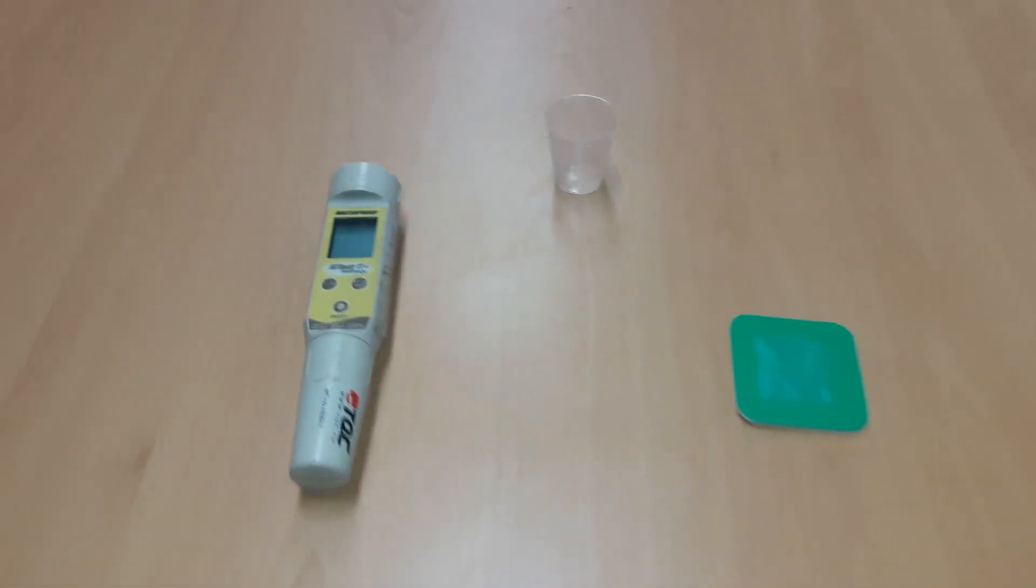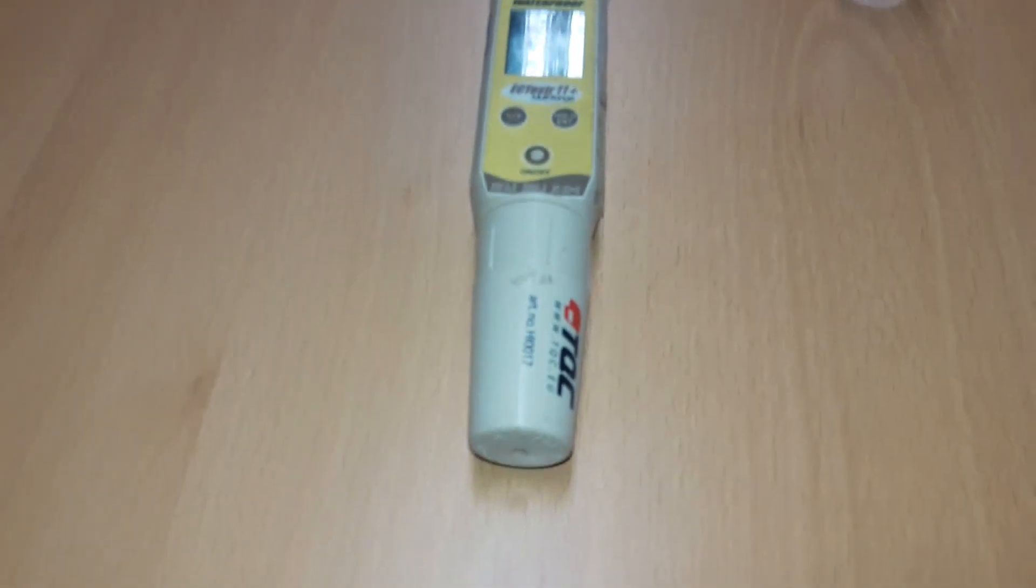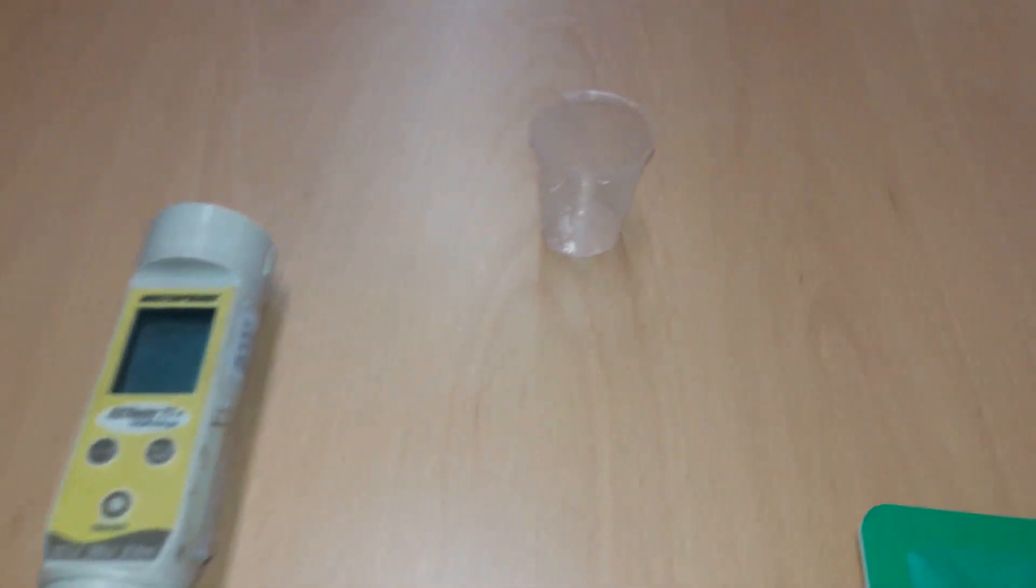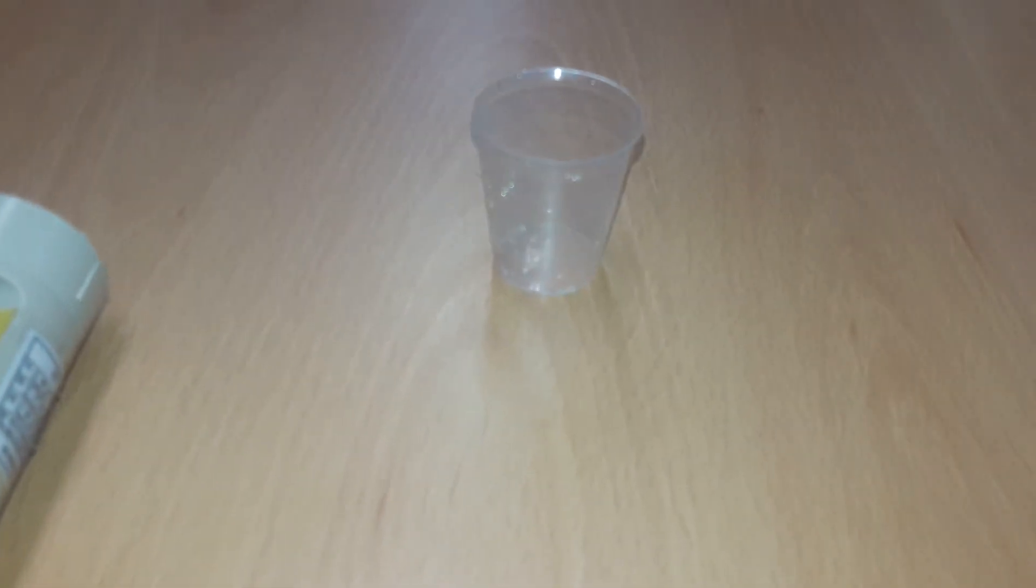Apparatus and Materials: Conductometer. Beaker, a convenient size and shape for housing the electrode end of the conductometer during measurement.